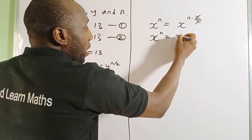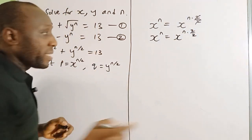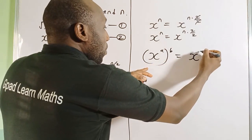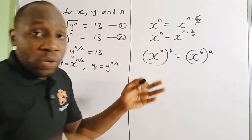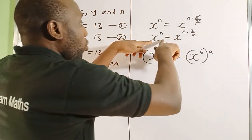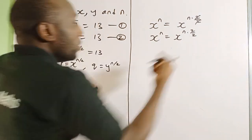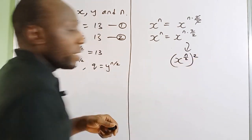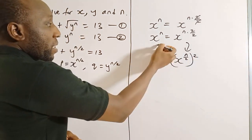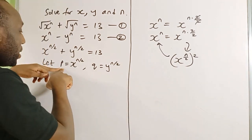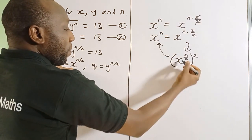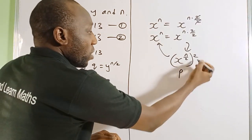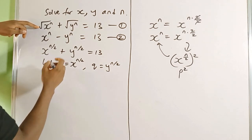So x raised to n becomes x raised to power n over 2, with a power of 2 on the outside. This uses the law of indices: x raised to power a, all raised to power b, equals x raised to power a times b. So x raised to (n/2) squared gives back x raised to n. Since p equals x raised to n over 2, replacing it gives p squared. Similarly for y, that gives q squared.